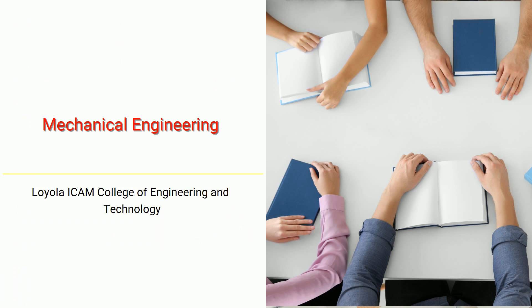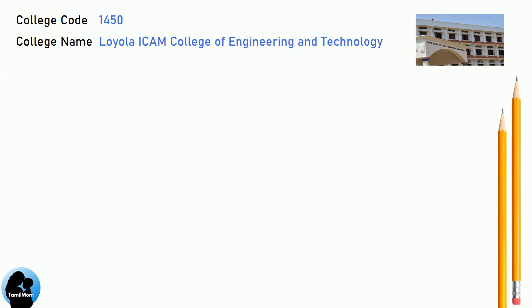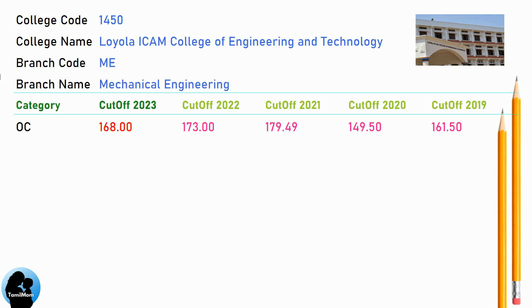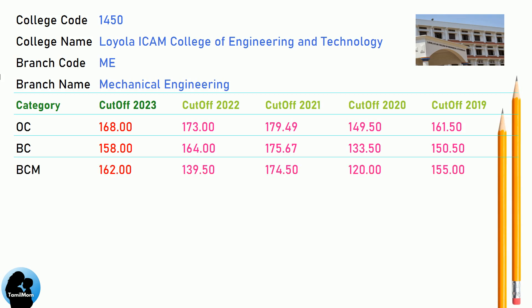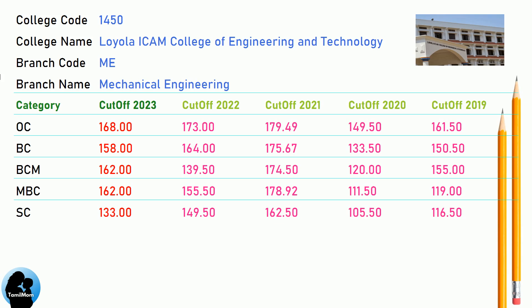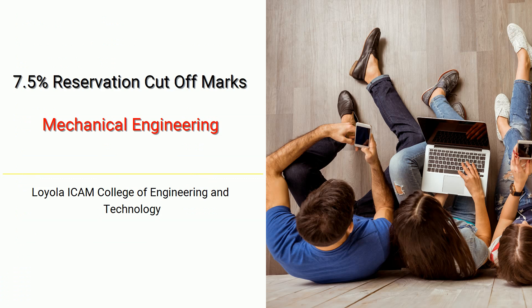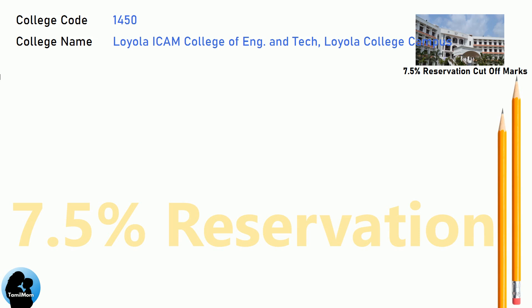DNA Round Two cutoff for Loyola ICOM College of Engineering and Technology in Mechanical Engineering. DNA 7.5 reservation cutoff for Loyola ICOM College of Engineering and Technology in Mechanical Engineering.